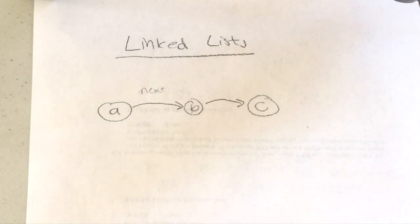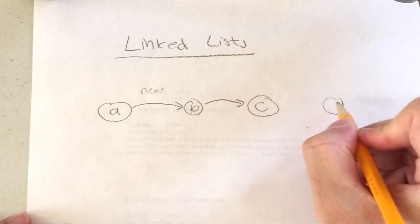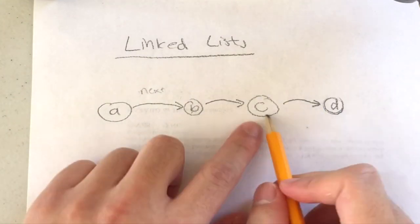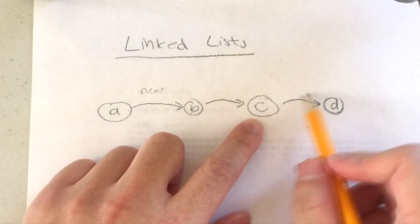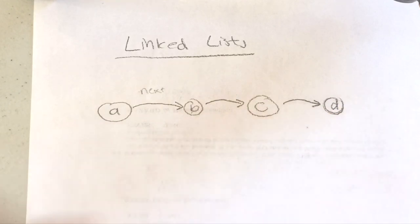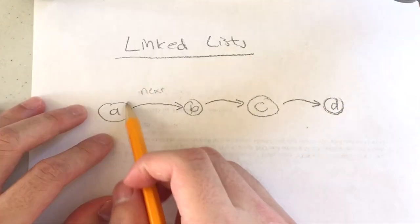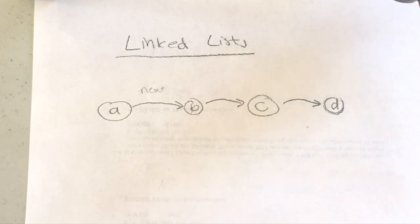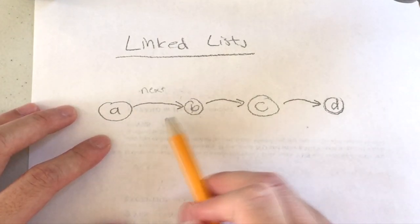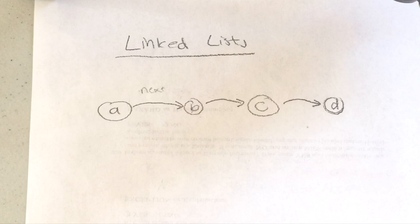So as you can see, if I insert a bunch of elements, I'm basically just adding a link from the last element to the next one I'm adding. If I insert D, I take the last element's next pointer and point it to D. So in a linked list, every element has a next pointer that points to the next element you're adding.